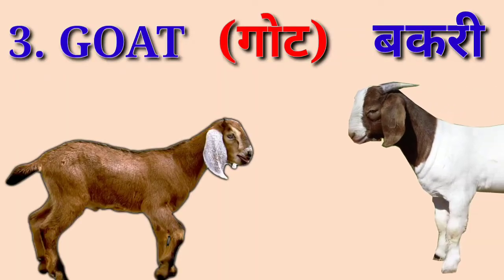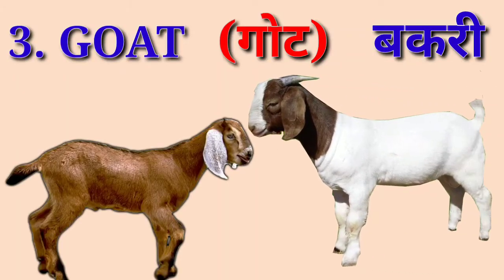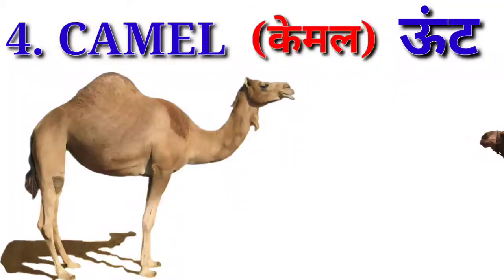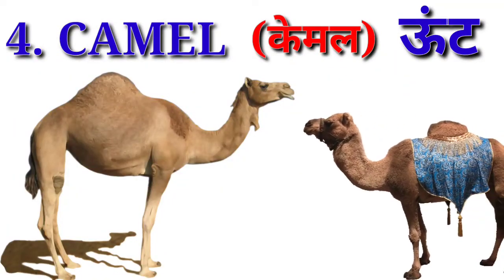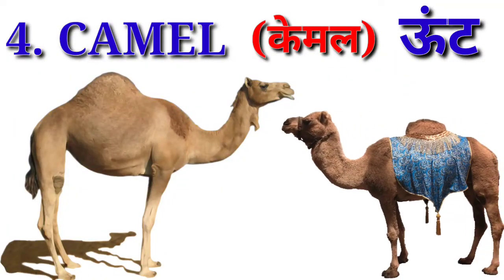Goat — goat means bakri. Camel — camel means oot.